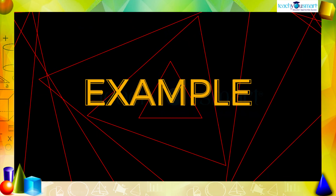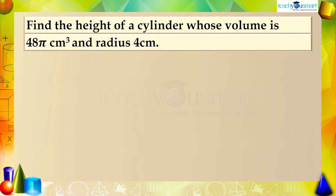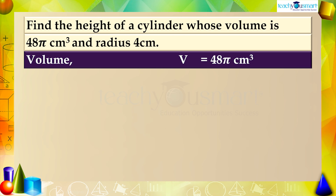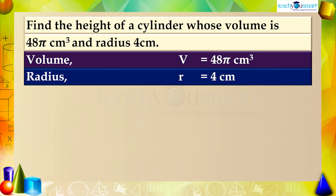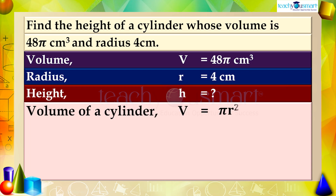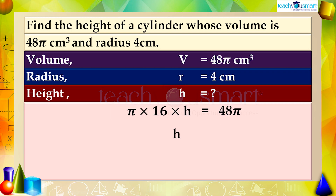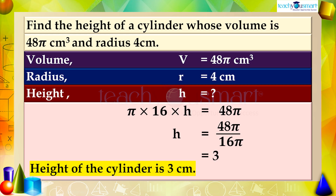Let's see another example. Find the height of a cylinder whose volume is 48π cubic centimeters and radius is 4 centimeters. Given: volume V = 48π cubic centimeters and radius r = 4 centimeters. We need to find the height. Using V = πr²h: π × 4² × h = 48π, so π × 16 × h = 48π, therefore h = 48π ÷ 16π = 3. Therefore the height of the cylinder is 3 centimeters.